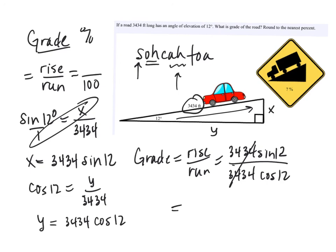To the nearest percent, that's about 0.21. As a percent, 0.21 is twenty-one hundredths, or 21 over 100, which is twenty-one percent.